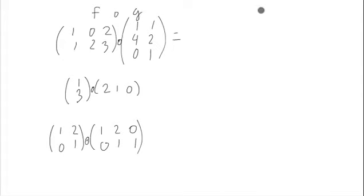So g goes to something. What is the domain of g? The domain of g is R2, since there's two columns. And the codomain of g is R3. And that's good, because the domain of f is R3, because it's three columns.